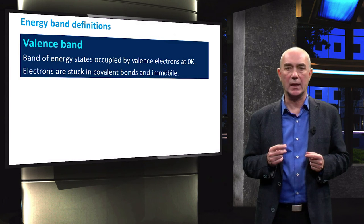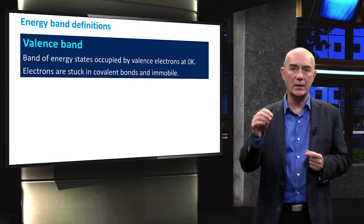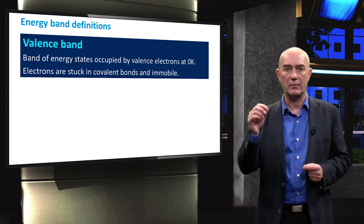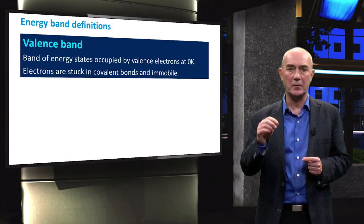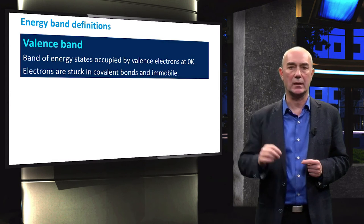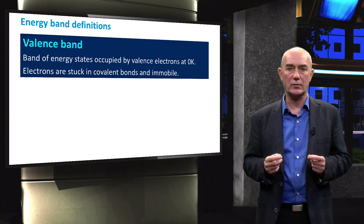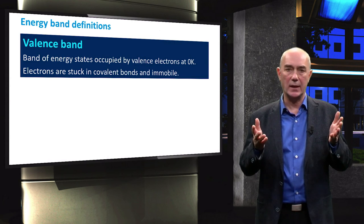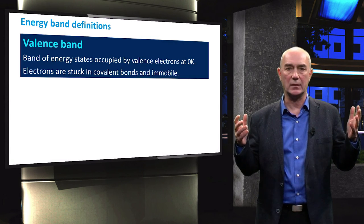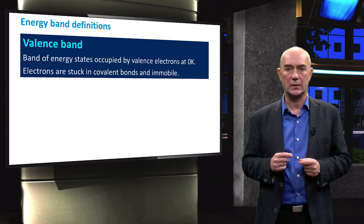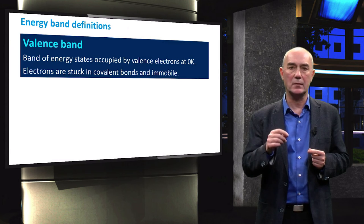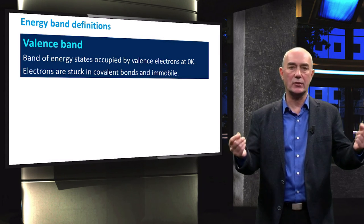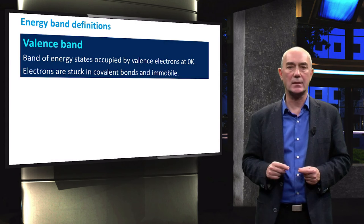When discussing three-dimensional dispersion diagrams, we said that only the bands that are most likely to be filled with electrons are represented. For device operation, valence electrons are the most important and therefore we focus on the energy of valence electrons. The allowed energy levels of valence electrons form the so-called valence and conduction bands. The valence band comprises the energy levels of all valence electrons in a semiconductor material at absolute zero. These electrons are the ones making the covalent bonds and when forming a bond they are immobile.